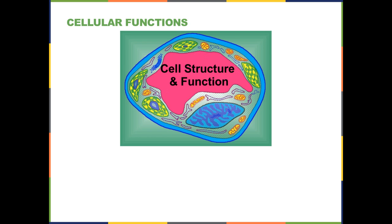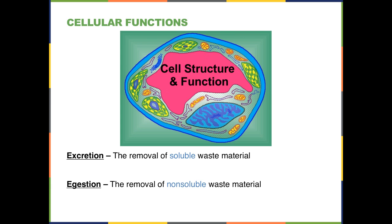Another important part of every cell is its ability to remove waste material. Anytime living processes occur, waste accumulates and the cell or system has to be able to remove those waste products. Excretion is the removal of soluble waste products, whereas egestion is the removal of non-soluble waste products. Thirdly, secretion is the release of synthesized substances — not necessarily waste products, but things like hormones used by other parts of the living system.